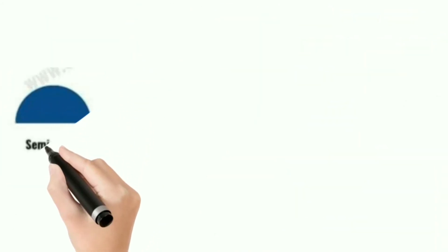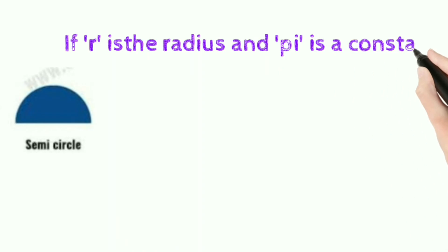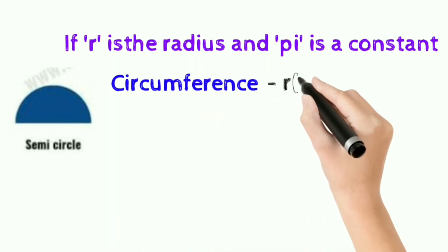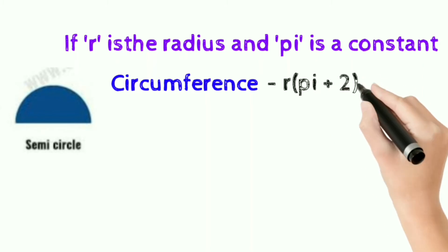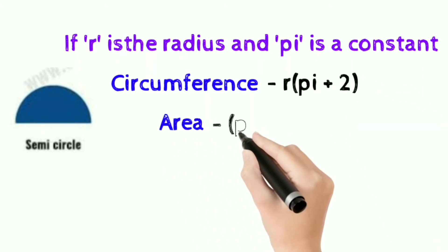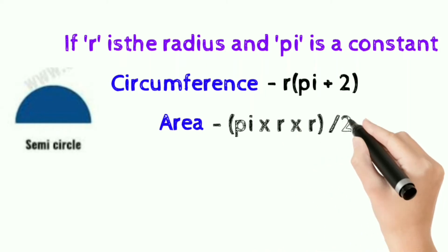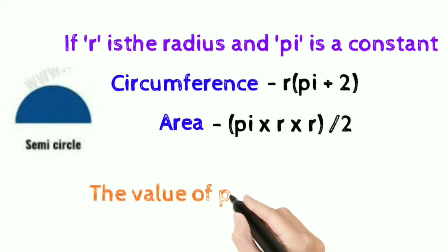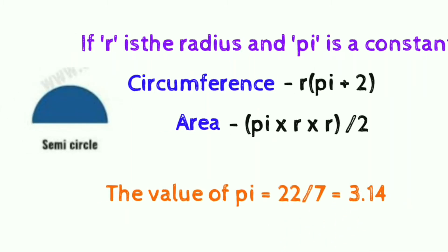Semi-circle: if r is the radius and pi is the constant, circumference of the semi-circle is r into (pi plus 2), and area of the semi-circle is πr squared divided by 2. The value of pi is 22 by 7, that is 3.14.